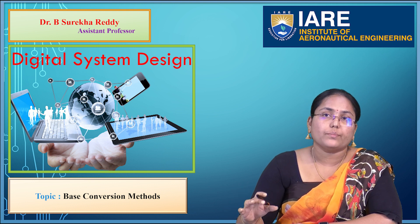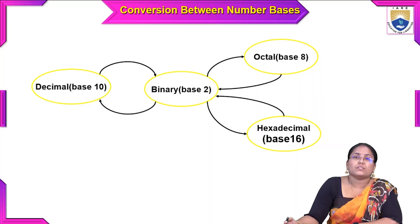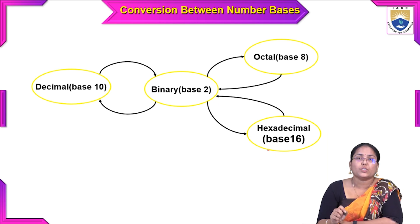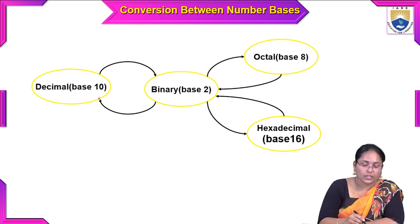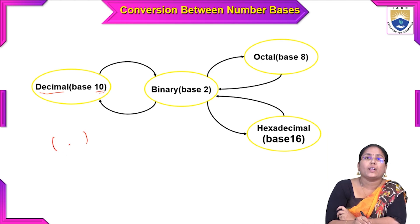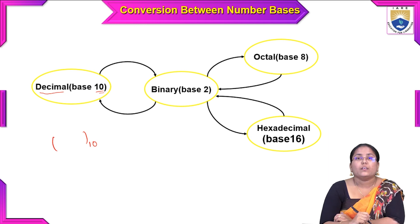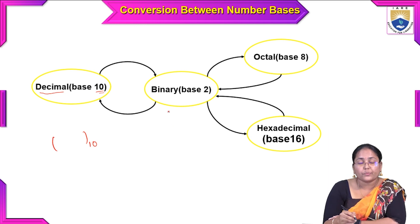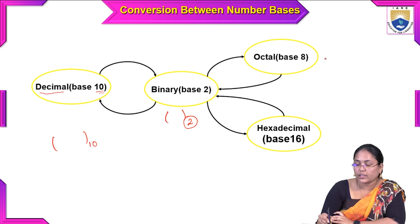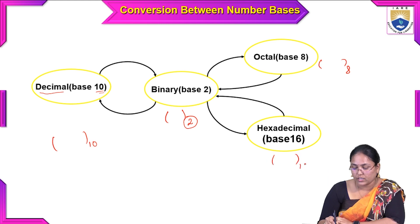Now let us talk about base conversion methods. The different bases we looked at in the previous lecture are decimal, binary, octal, and hexadecimal — which is the new one we are going to look at today. In decimal, the base is 10. In binary, the base is 2. In octal, the base is 8. And in hexadecimal, the base is 16.